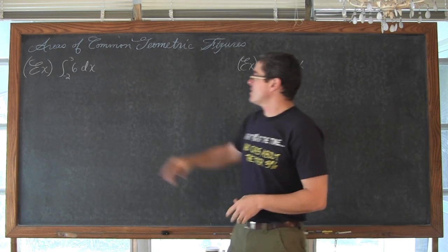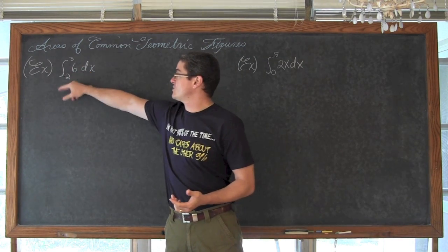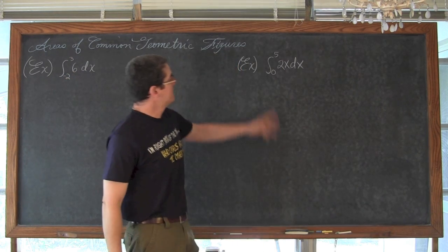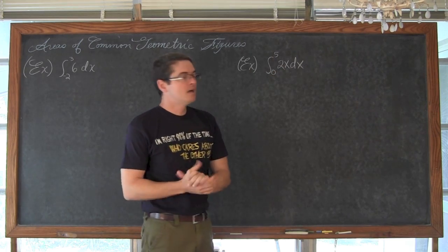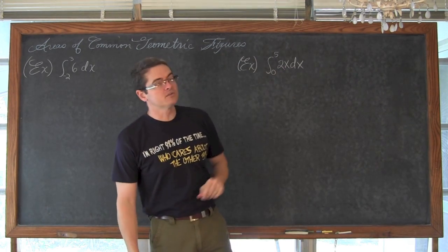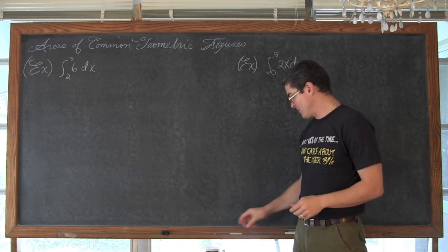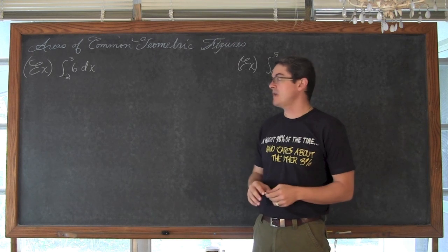However, these four examples are going to be like these two up here where we are doing the definite integral from negative 2 to 3 of 6 dx and the definite integral of 0 to 5 of 2x dx. Now with this constant and this single degree function here, we might not need to go through that limit process that we have been doing in a lot of these videos to find this area.